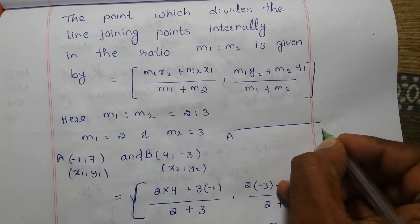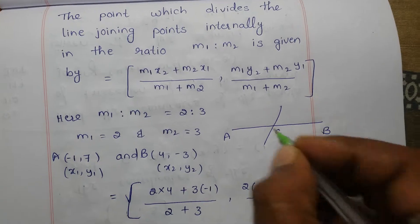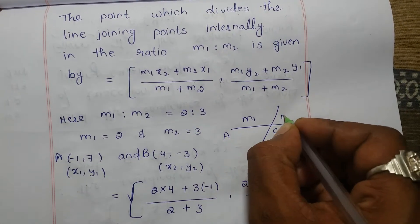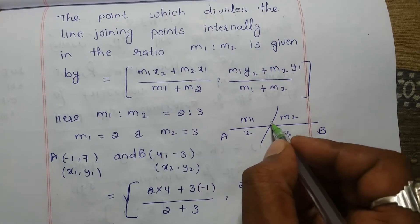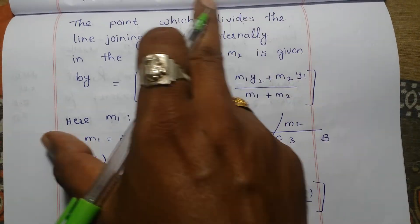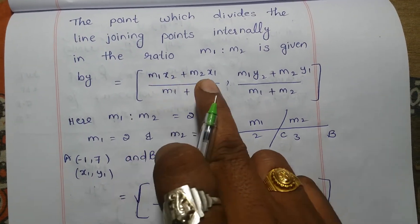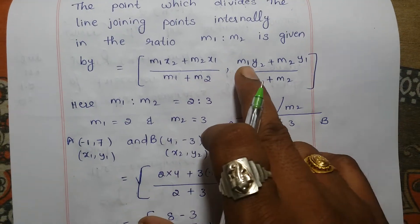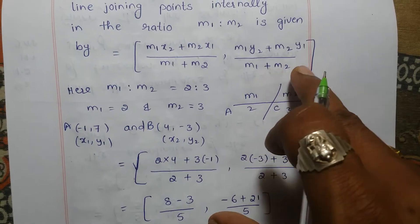For example, take A and B as a line segment. C is a point in between A and B which is dividing in the ratio m1 is to m2, that is 2 is to 3. So we have to find the coordinates of C. For that we are using the section formula: m1·x2 + m2·x1 by m1 + m2, m1·y2 + m2·y1 by m1 + m2.